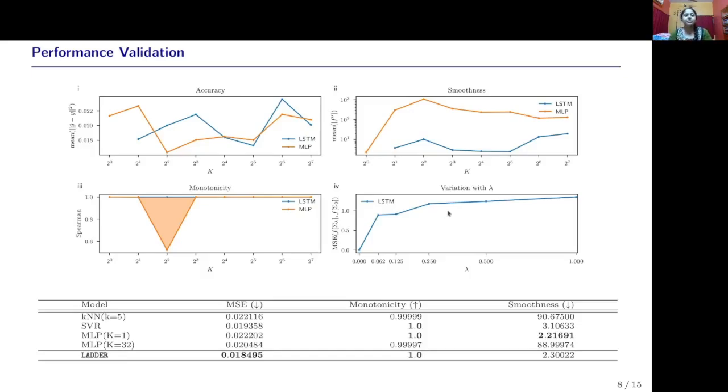We find that our network model can properly address the correlations given in the data. This chart shows the comparison between the performance of LADDER versus some other deep learning models, for example, the KNNs, the support vector machines, and ordinary ANN configurations with sample set at 1 and sample sets of 32.